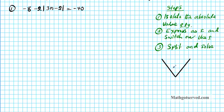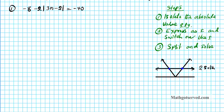If the absolute value function opens upwards and the line intersects at a point higher than the vertex, you have two solutions — one here and one here. If the line intersects the absolute value function exactly at the vertex, then you're going to have exactly one solution, because there's only one x value that satisfies the equation.